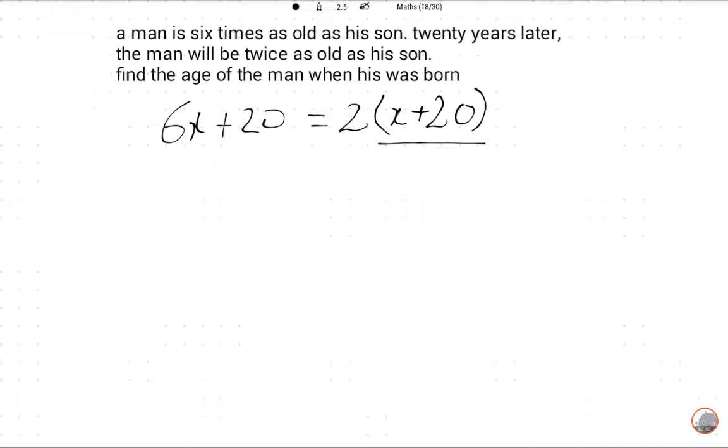After 20 years, his son's age is this and man's age is this, so it will be twice of his son's age. Obviously, now we will arrange.